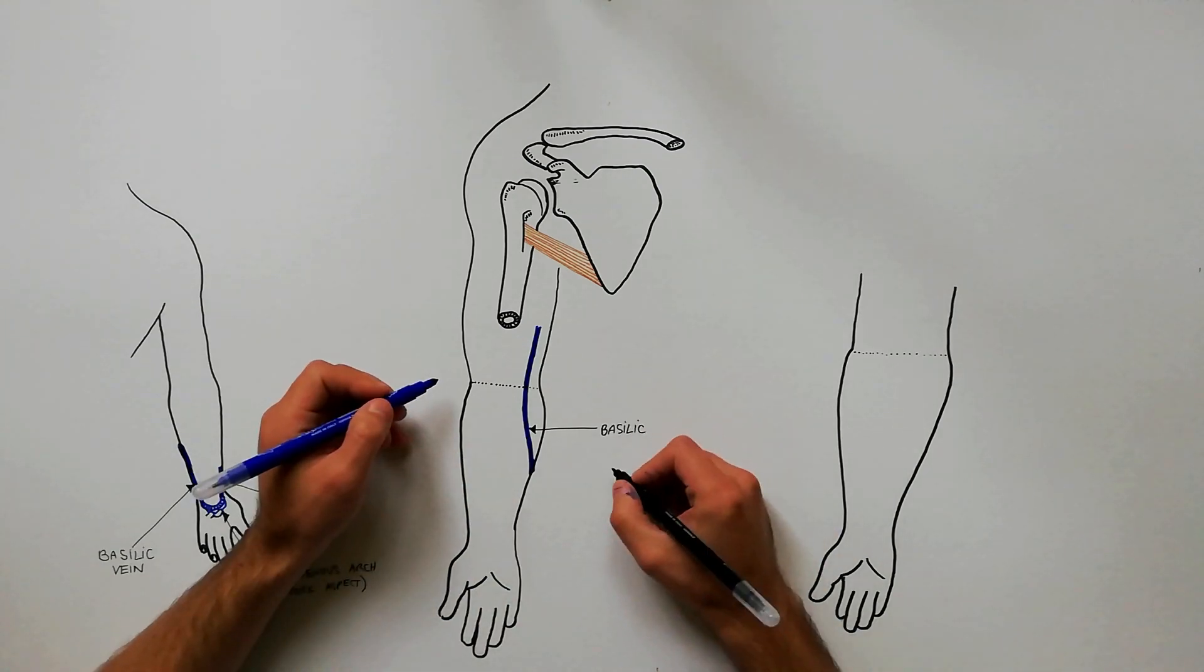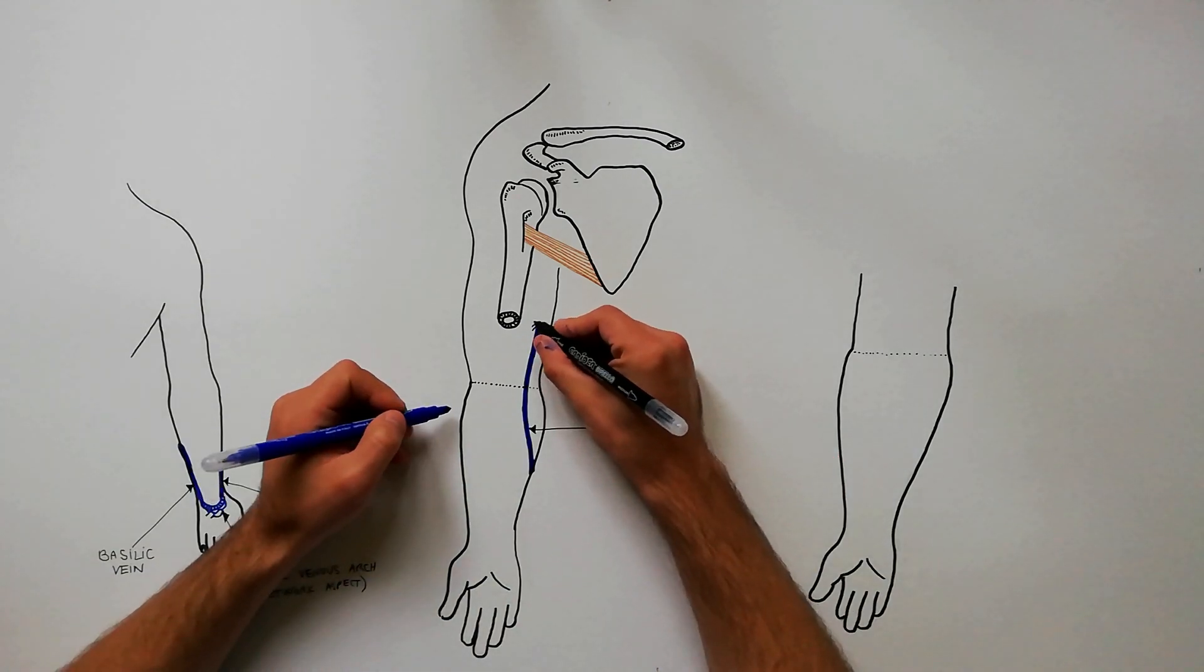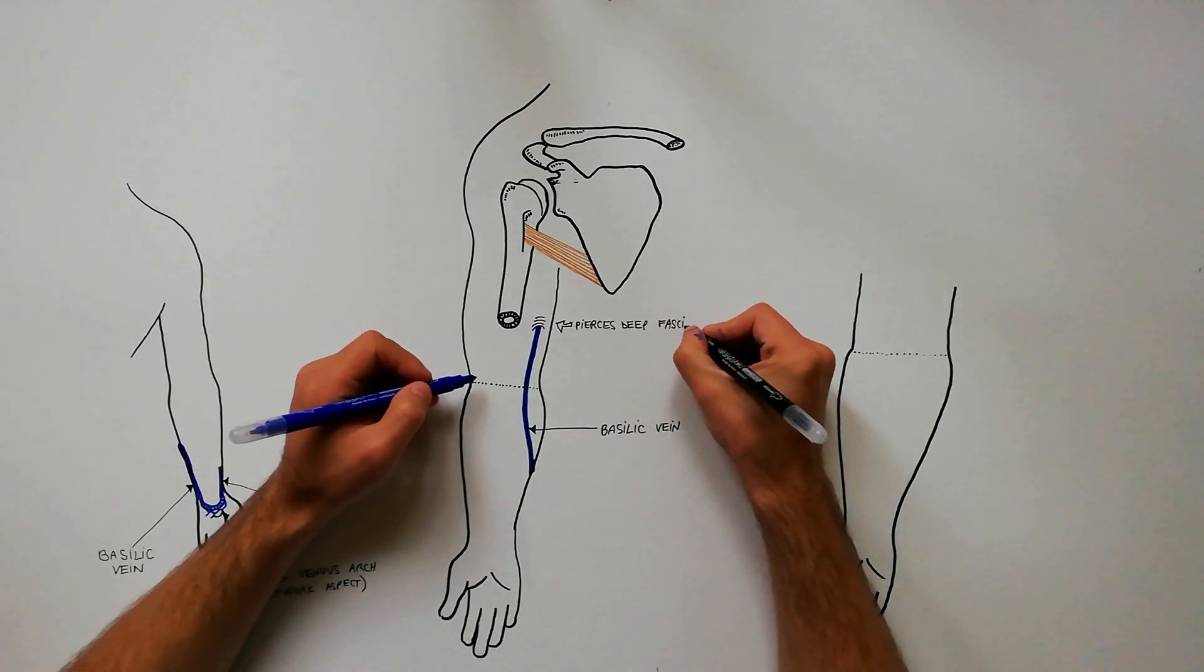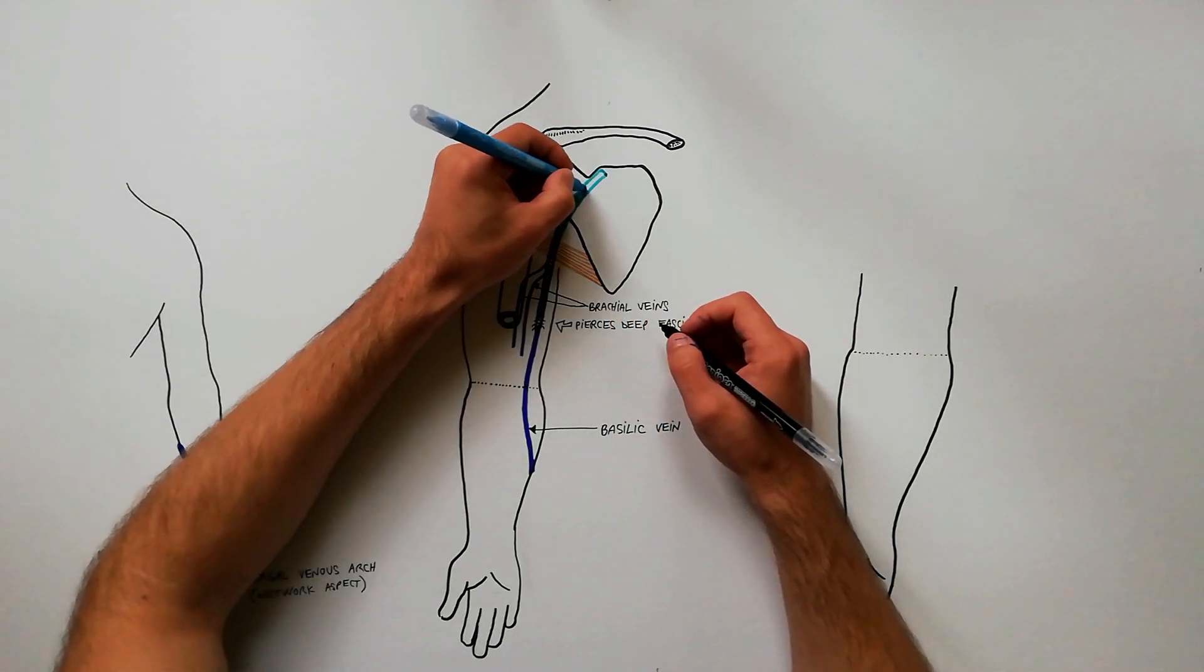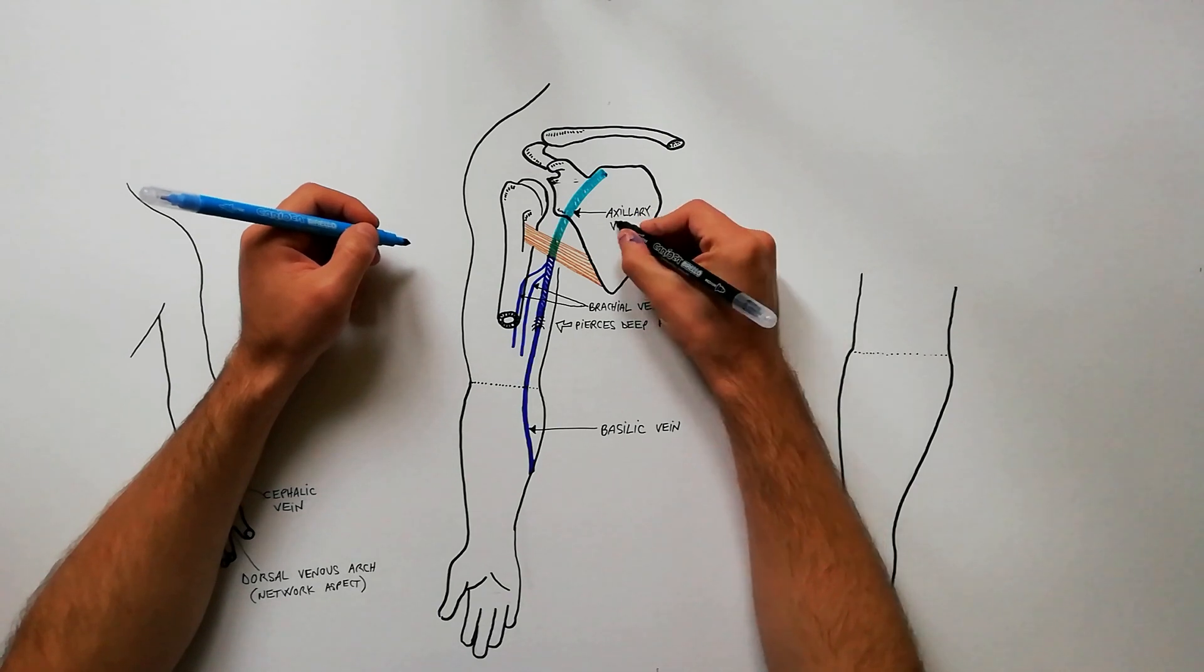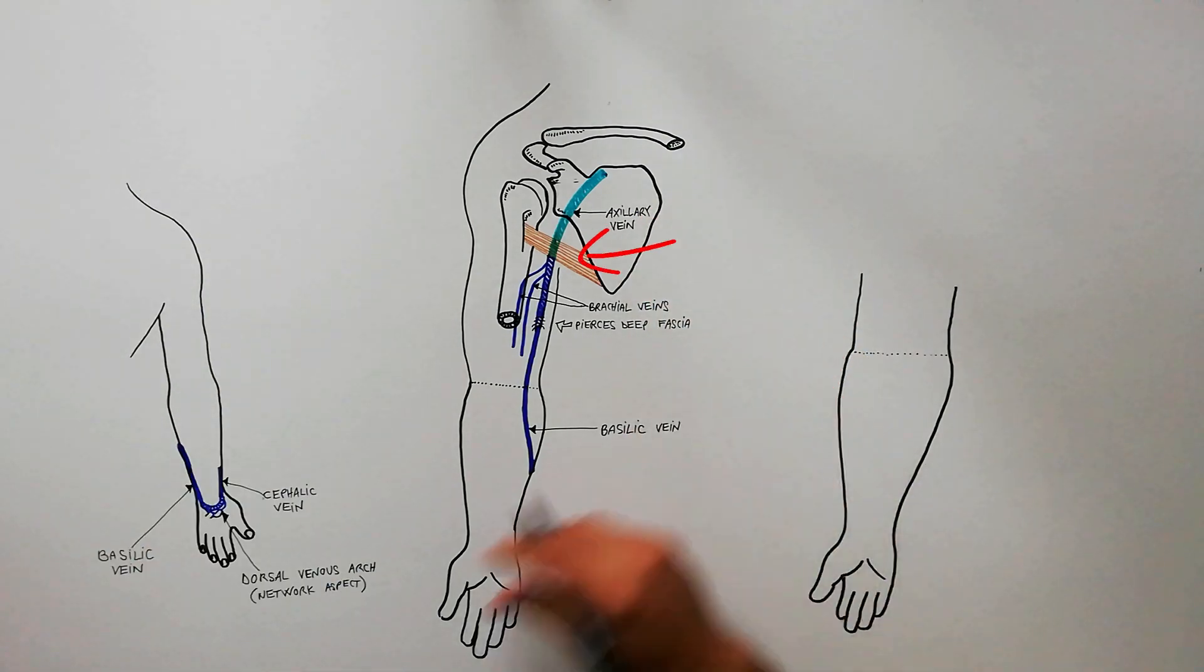Up to the middle of the arm, it pierces the deep fascia and unites with the brachial veins to become continuous with the axillary vein at the lower border of the teres major.